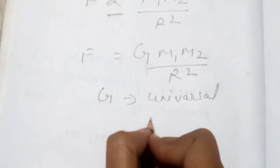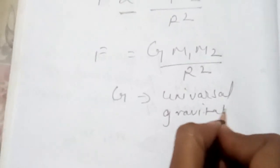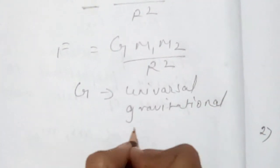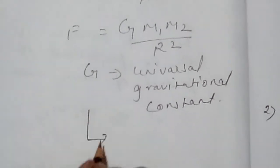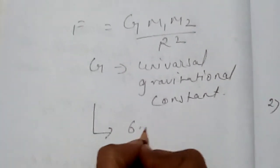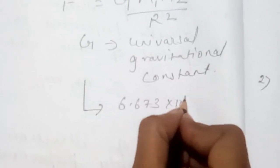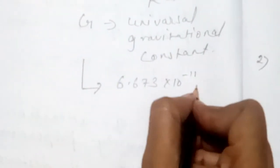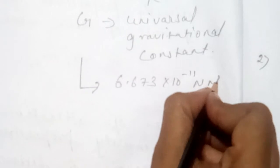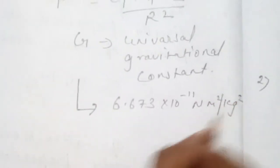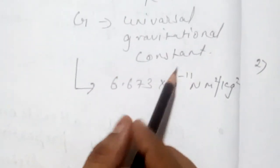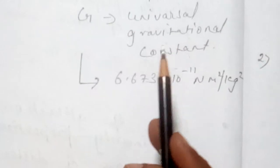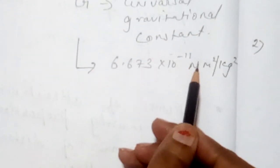Value of G has been found by our scientist Cavendish and he has given the value, that is 6.673 into 10 to the power minus 11. And SI unit we also know: Newton meter square per kg square. Now students, anywhere you go in the universe, either on the sun or on Uranus or on the surface of the earth.